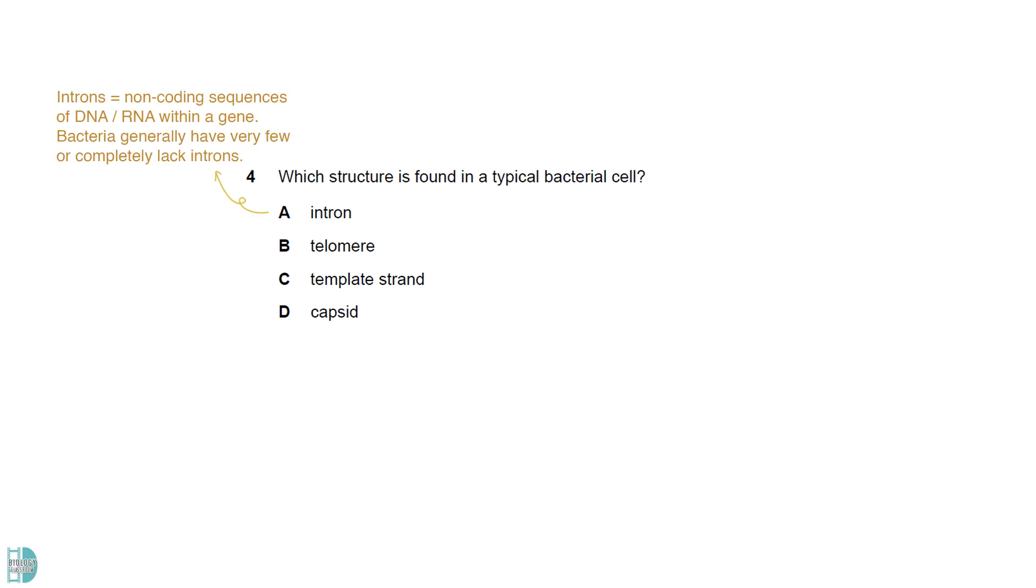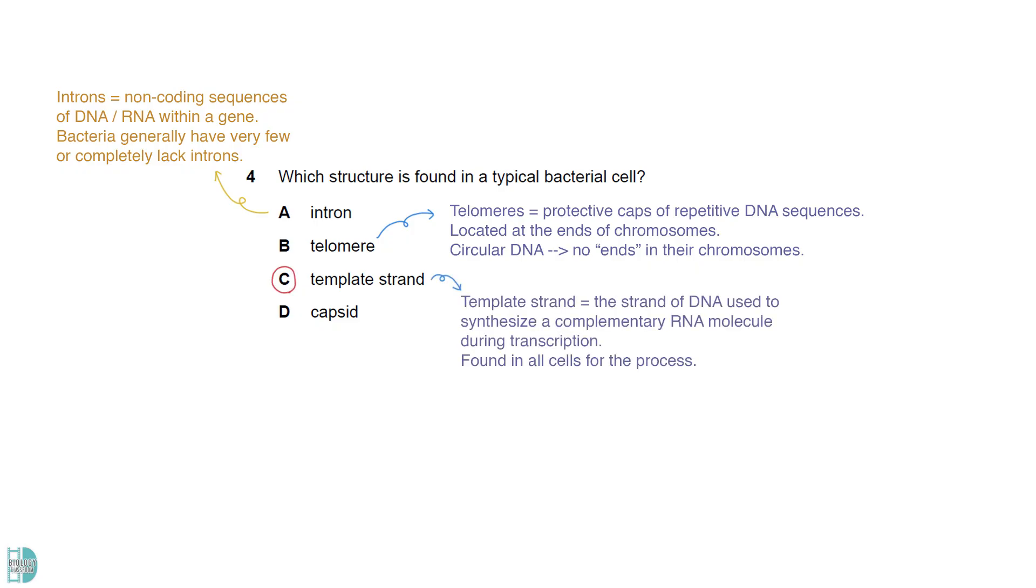Introns are the non-coding sequences of DNA or RNA within a gene. Bacteria generally have very few or completely lack introns. Telomeres are protective caps of repetitive DNA sequences located at the ends of chromosomes. They have circular DNA, meaning there are no ends in their chromosomes. The template strand is the strand of DNA used to synthesize a complementary RNA molecule during transcription. Any cells that carry out the process would have it. A capsid is a protein coat that encloses the genetic material of a virus.